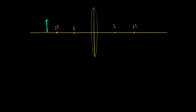It's useful to draw one ray. Remember, every point on this object is emitting rays in every direction because it's diffusely reflecting light, so we just pick rays that are convenient. We go from the tip of this arrow parallel to our principal axis. I'm not going to show all of the internal refraction within the lens, but we know that if we enter the lens parallel to the principal axis, when we get refracted, we will go through the focal point on the other side of the lens.